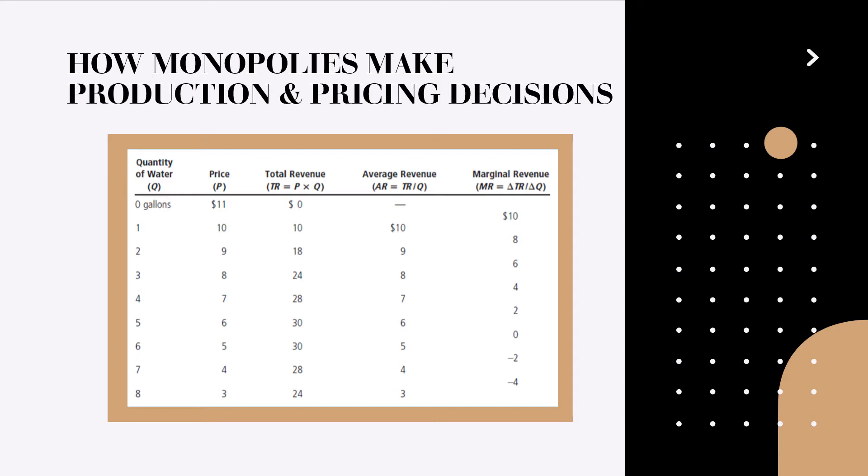As you can see total revenue after that point decreases from 30 to 28. And this is also illustrated in the last column of marginal revenues. As you can see marginal revenues are decreasing up to the point when the marginal revenue becomes zero. After this point the marginal revenue is negative.